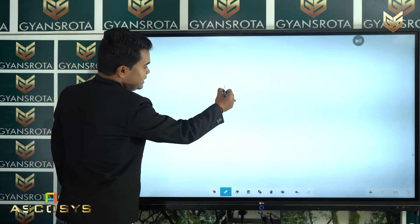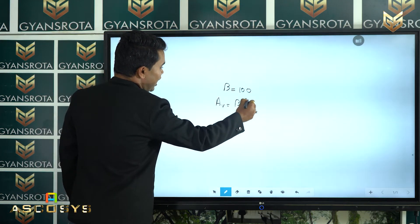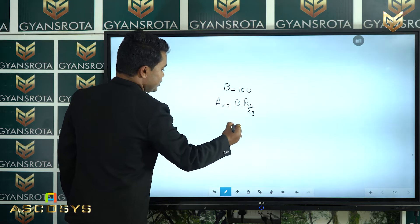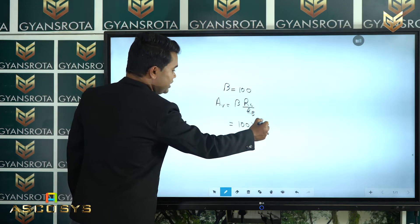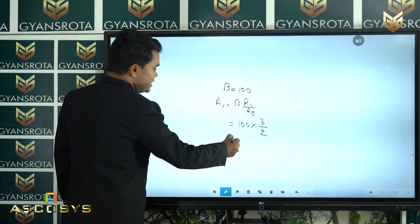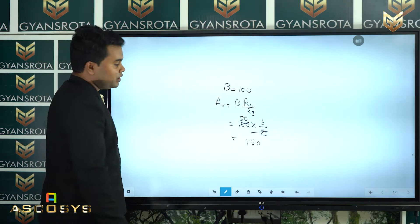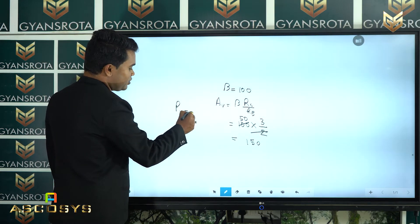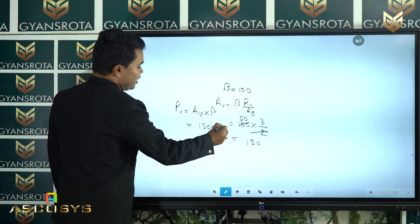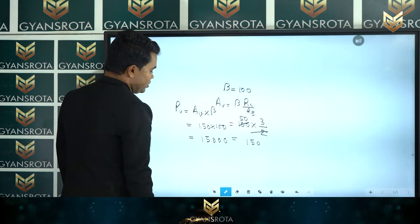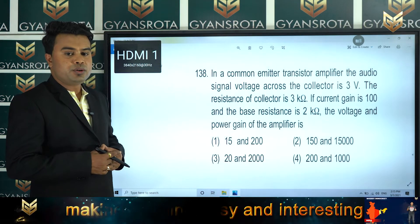Beta is given as 100. The voltage gain A_V equals β × R_C / R_B. So A_V = 100 × 3 / 2 = 150. The power gain P_V equals A_V × β = 150 × 100 = 15000. Looking at the options, option number 2 is the correct answer.